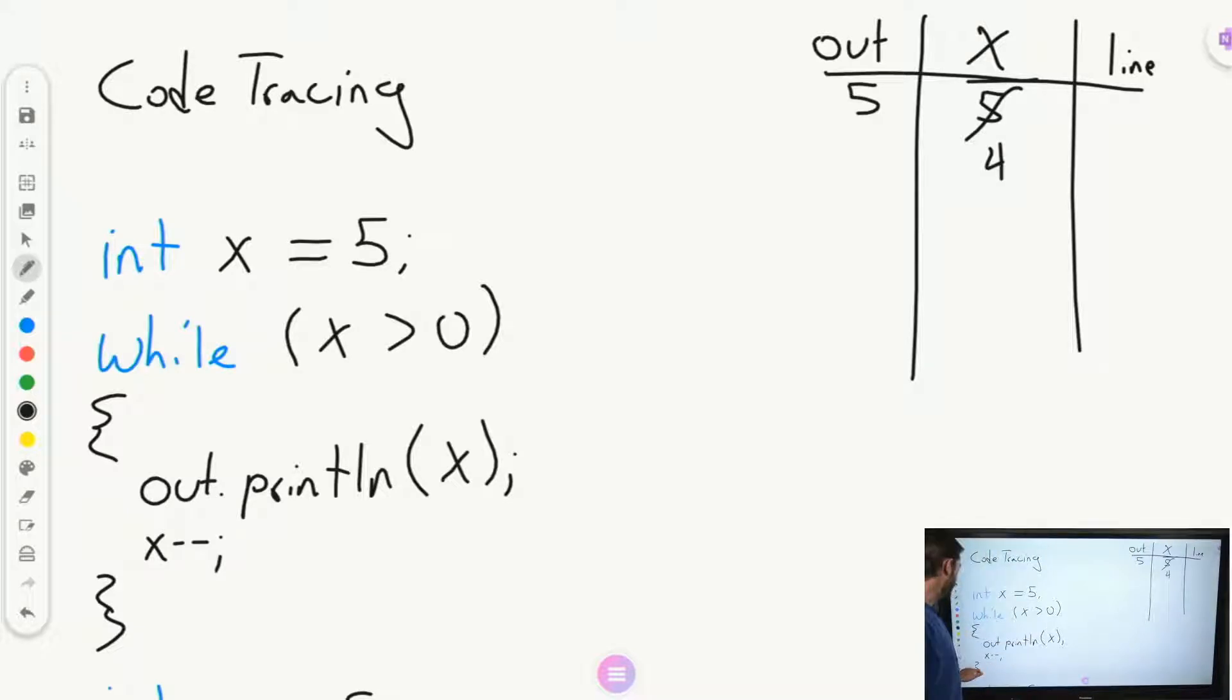Now we hit the end of our while loop. We jump back up to the top, and we check our test case. Is x still bigger than 0? Yes, it is. Good. We step inside, and we print x, and we now output 4 on a new line because we're using println. We decrement x to 3, and repeat the process.